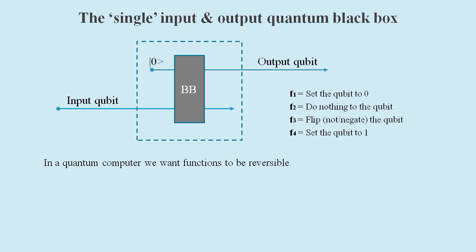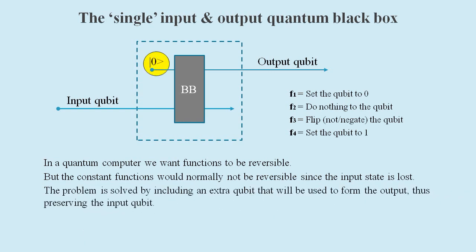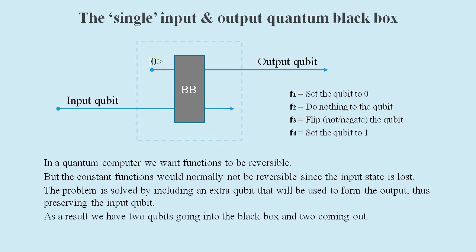Unlike the classical case, in quantum computing the functions should be reversible. So if we apply a constant function such as set the output qubit to zero, then it would be nice to be able to apply a function called reverse constant zero that would set its output qubit to be the same as the original input, but we can't do that if the original input is lost. The problem is solved by including an extra qubit that will be used to form the output, thus preserving the input qubit. As a result, we have two qubits going into the black box and two coming out.